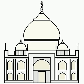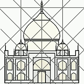Mughal architects employed basic geometric principles in the design of their buildings. The design of the Taj Mahal is dominated by a series of grids where the primary shape is a pointed arch within a rectangle. This motif is employed on all scales of the complex, providing a sense of architectural unity throughout.